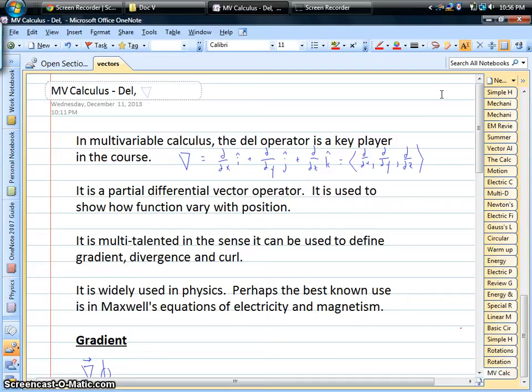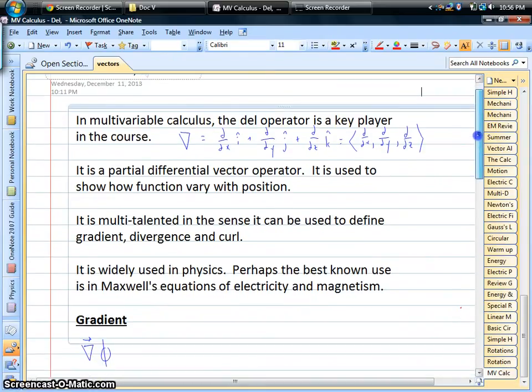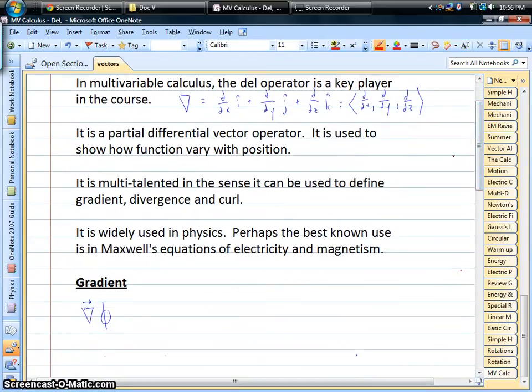Del is one of the main players in multivariable calculus, and it's used in three different ways, three different types of operators in physics: the gradient, the divergence, and the curl.